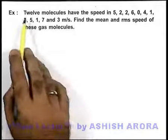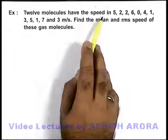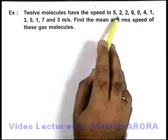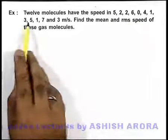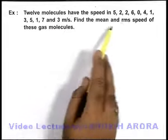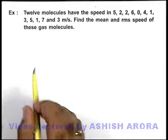In this example, we are given twelve molecules with speeds of 5, 2, 2, 6, 0, 4, 1, 3, 5, 1, 7, and 3 meters per second. We are required to find the mean and RMS speed of these gas molecules.